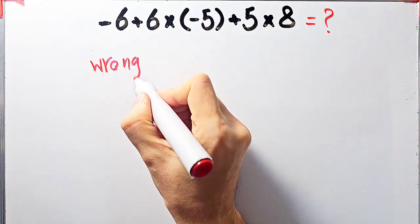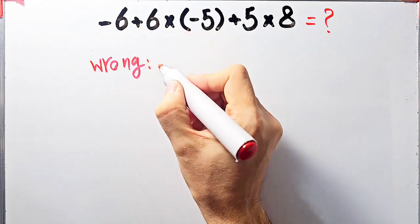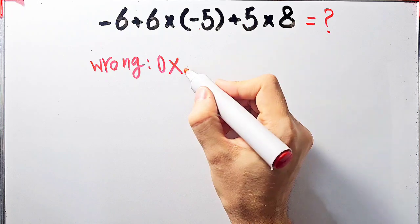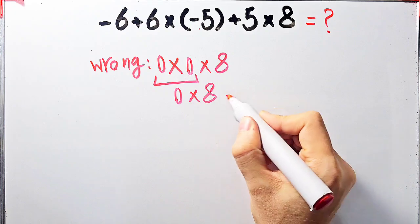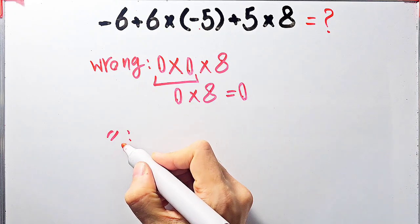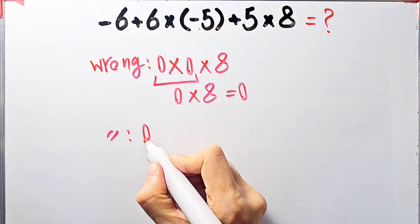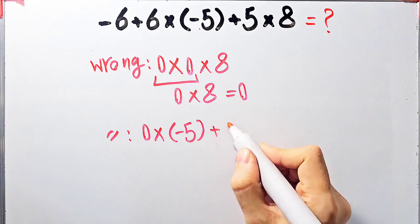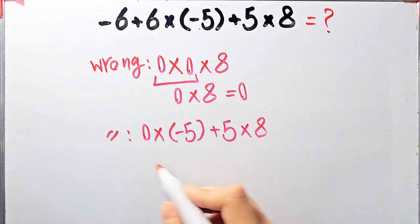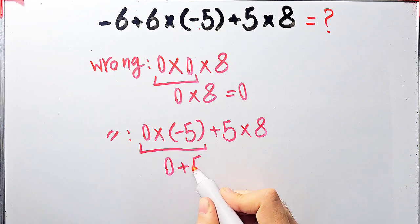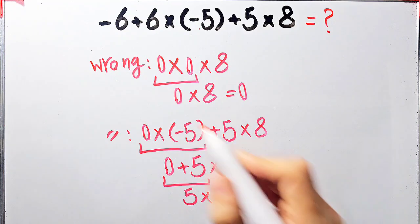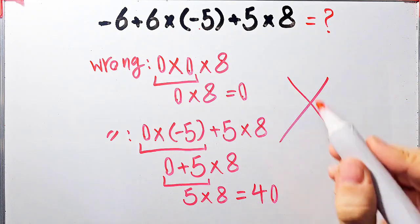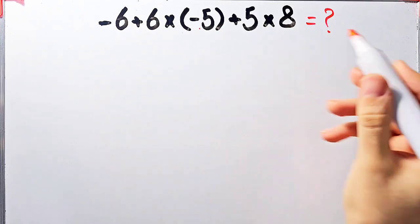Some people solve this question like this: they say negative 6 plus 6 equals 0, then 0 times negative 5 plus 5 equals 0, then 0 times 8 equals 0, so the answer is 0. Others start from the left: negative 6 plus 6 equals 0, then 0 times negative 5 equals 0, then 0 plus 5 equals 5, and 5 times 8 equals 40. They say the final answer is 40. But both of these answers are definitely wrong.